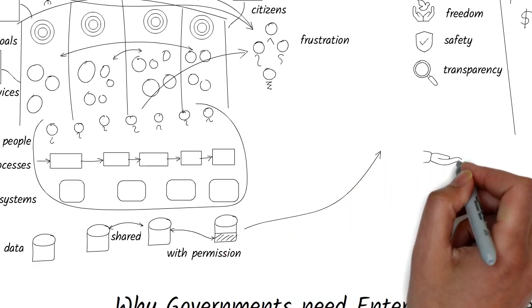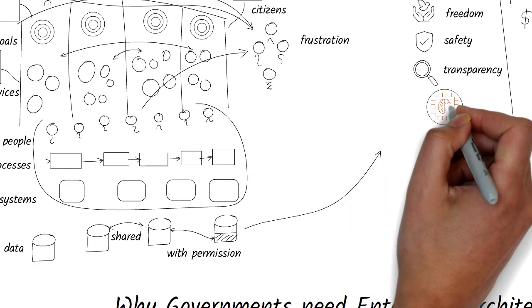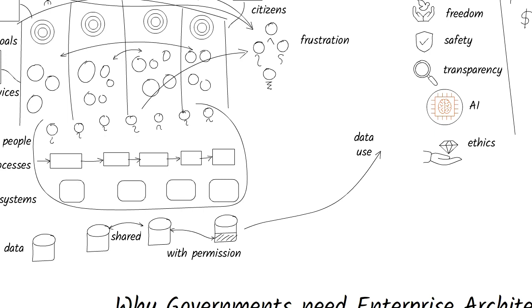For example, government investments in AI and ML are much more difficult because of ethical considerations about how they collect, save, use, and share personal data about their citizens.